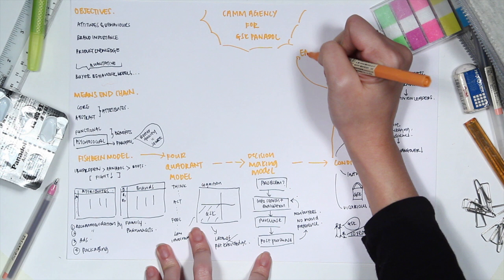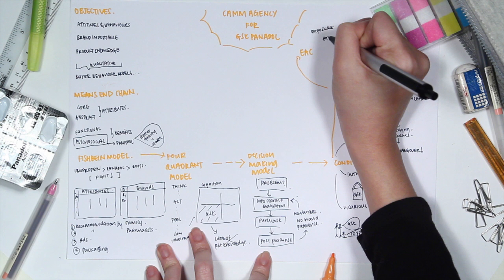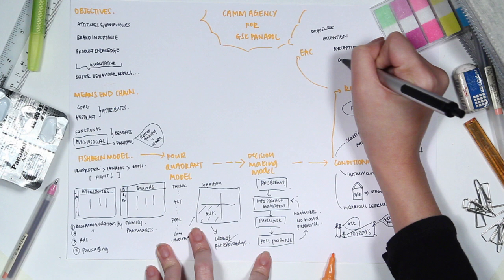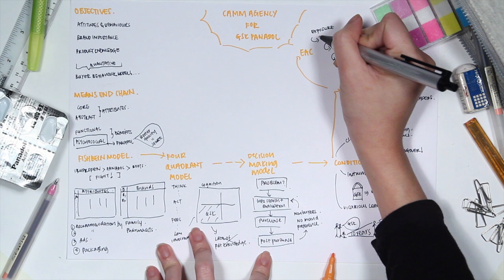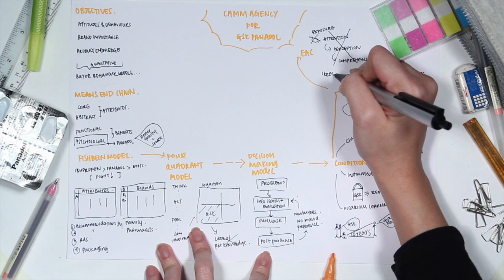Lastly, exposure, attention and comprehension model was considered irrelevant. As you can see, this process involves merely four stages: exposure, attention, perception, which ultimately leads to comprehension. However, as information from the external environment was not provided, neither intentional nor accidental forms of exposure were introduced for Panadol, therefore making this model irrelevant.